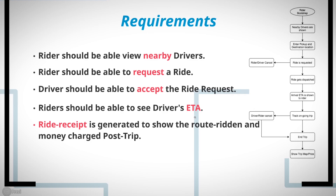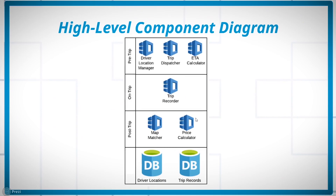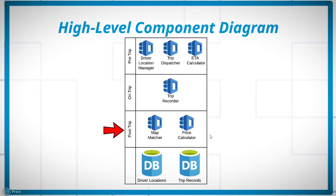Drawing from the trip lifecycle, let's create a high-level component diagram. When Bob opens the app, the Uber app calls the Trip Dispatcher microservice, which calls the Car Location Index to show nearby drivers. Those locations are stored by the Driver Location Manager microservice. The Trip Dispatcher also calls the ETA Calculator microservice. During the trip, the Trip Recorder tracks raw GPS signals. Post-trip, the Map Matcher and Price Calculator take input from the Trip Recorder to generate the receipt.